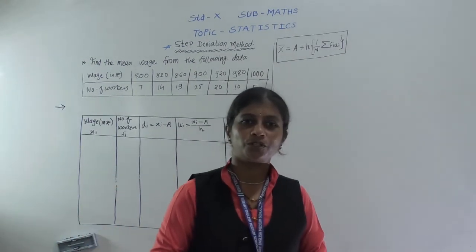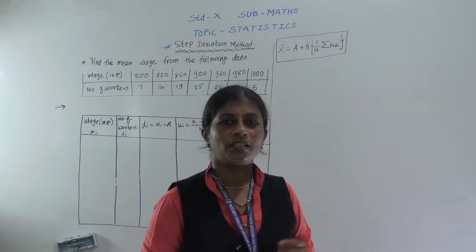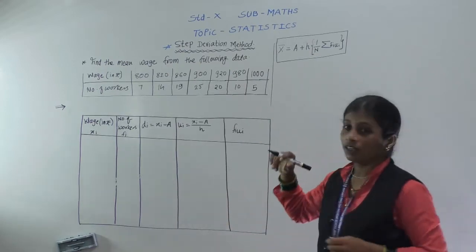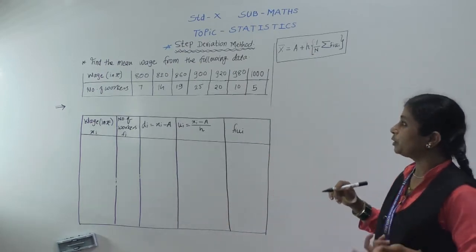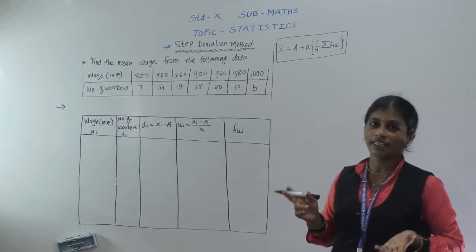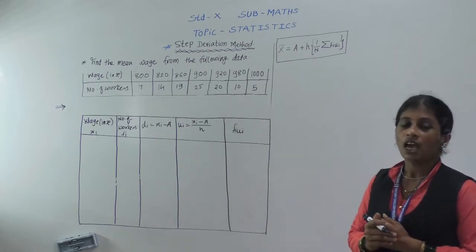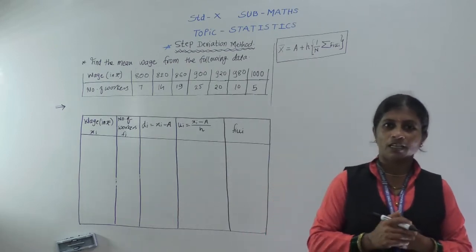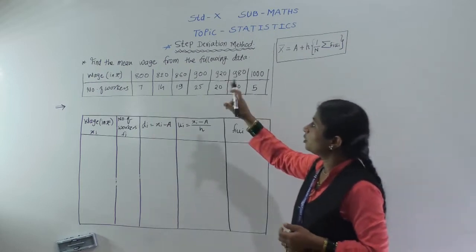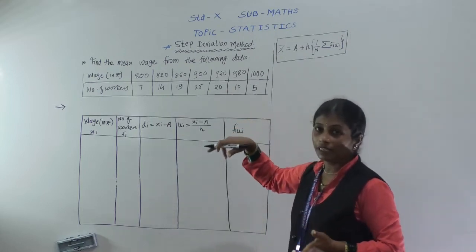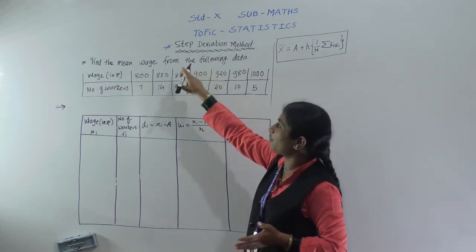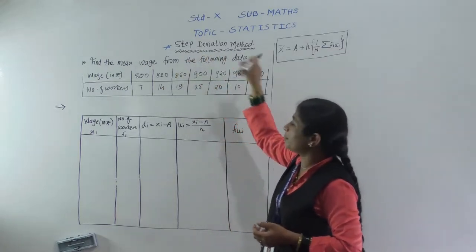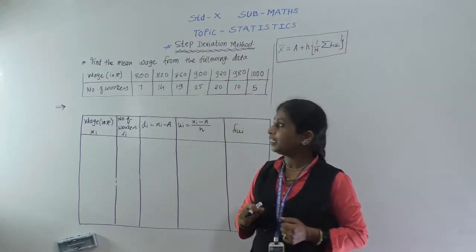Hello students, good morning to all. In the last period, we learnt to find the mean by using the direct method and by using the assumed mean method, which is the shortcut method. Now in this period we will see how to find the mean of the given data by using the step deviation method.